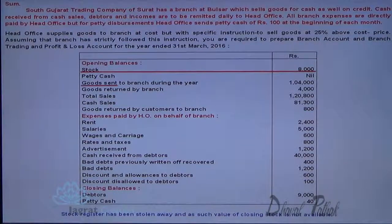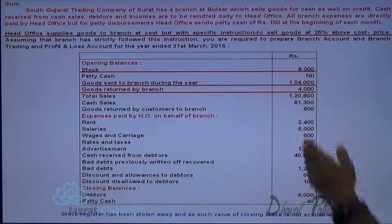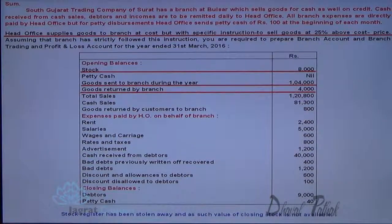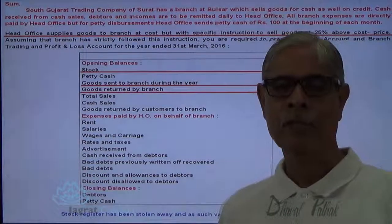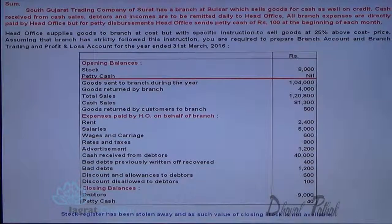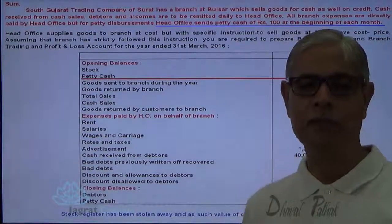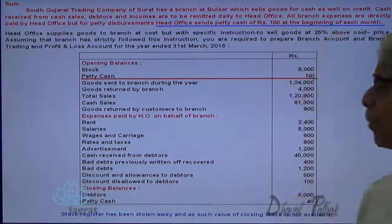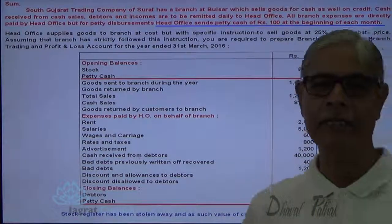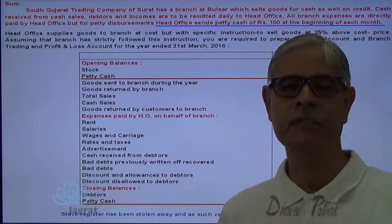Opening stock, goods sent, and goods return are available. Closing stock is missing — this is because a 25 percent profit above cost is to be charged when goods are sold by the branch. Opening balance of petty cash is nil. Cash sent during the year is 100 rupees per month, totalling 1200 rupees. The closing balance of petty cash is 40 rupees, so petty expenses for the year are 1160 rupees.